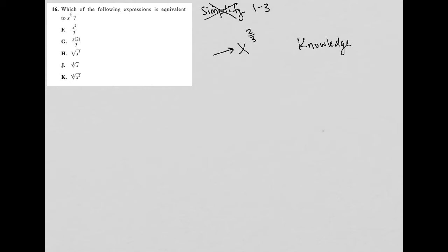If you have an exponent that's a fraction, the denominator of the fraction becomes the type of root. So we have cube root. The base here goes within that radical or root, and the numerator is the power on that base. So cube root of x squared is another way of writing x to the two-thirds power. And that tells us that choice K is the correct answer.